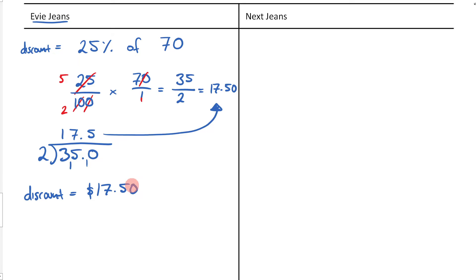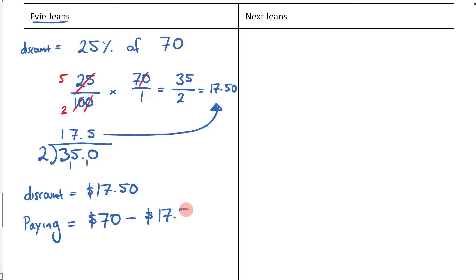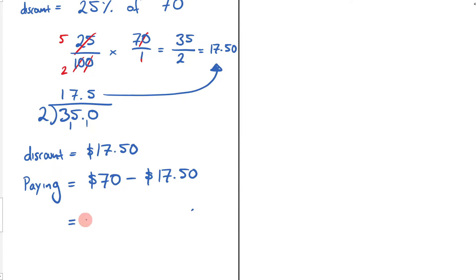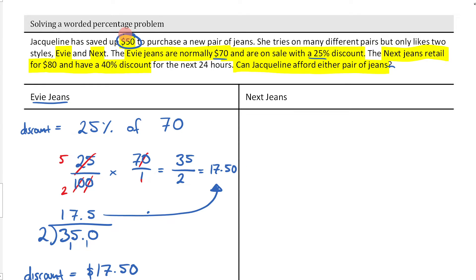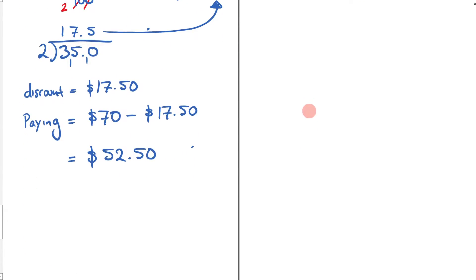That isn't how much she's paying. She's going to take the $70 they're normally worth and subtract the saving of $17.50 — subtracting the discount from it. When you do that, you end up with $52.50. She has $50, so can she afford them? We can definitely say she can't afford these ones.